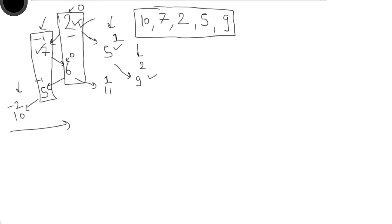To solve this we assign heights to nodes: the root is at height 0. Whenever we go left, we assign that node height minus 1. Whenever we go right, we assign that node height plus 1.